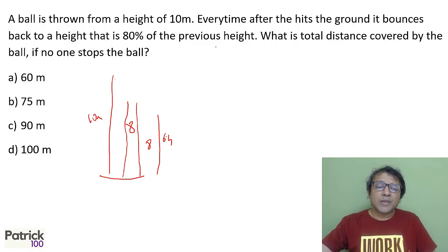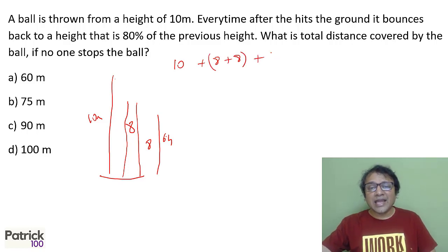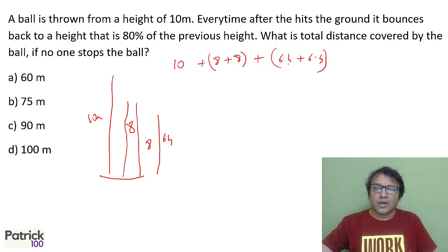If you notice, it is a geometric progression: 10, then 8 and 8 two times, then 6.4, 6.4, and so forth. If I add 10 first and then subtract 10 at the end, you get a geometric progression of 20, 16, 12.8, and so on, where the common ratio is 0.8, minus 10.